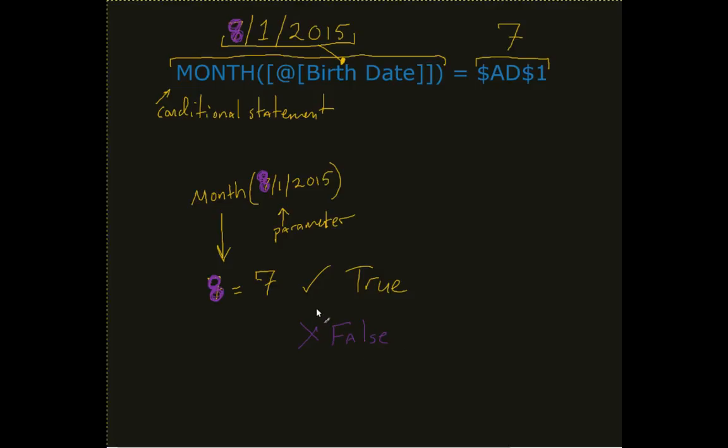If we think about how the IF statement operates, it's going to take this conditional statement, have something for if it's true, and have something for if it's false.